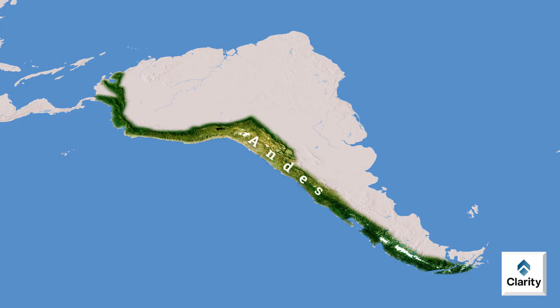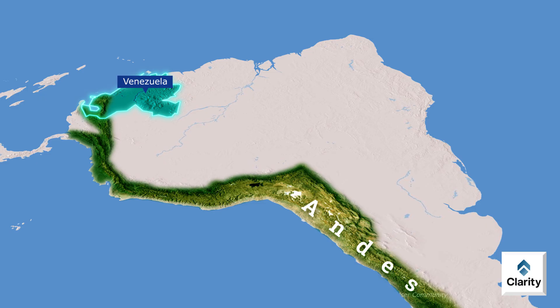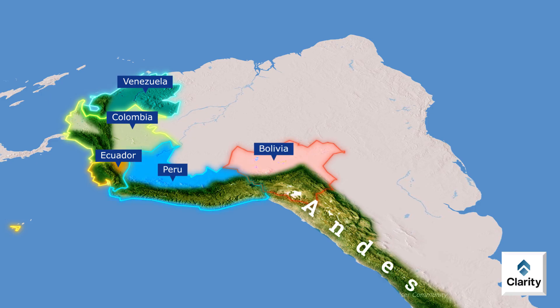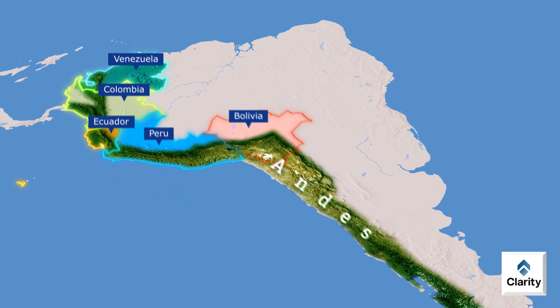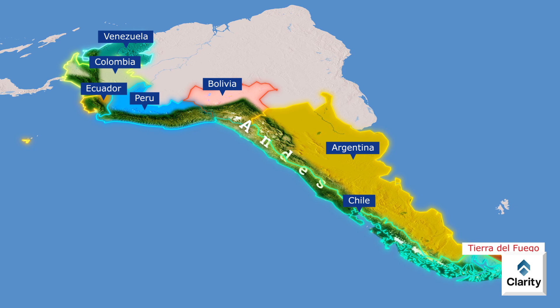The Andes begin in Venezuela in the north. From there, they pass through Colombia, Ecuador, Peru, Bolivia, Chile and Argentina. They stretch all the way south and end at Tierra del Fuego.